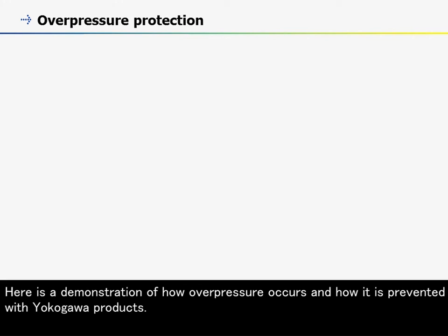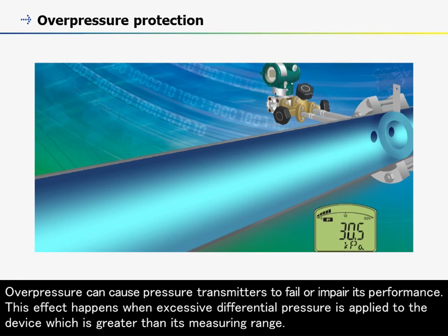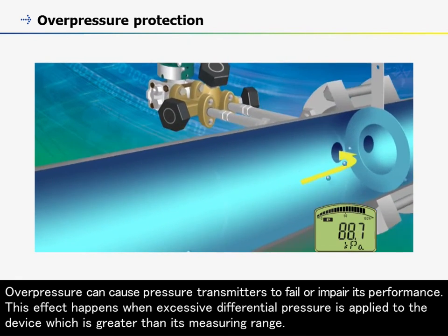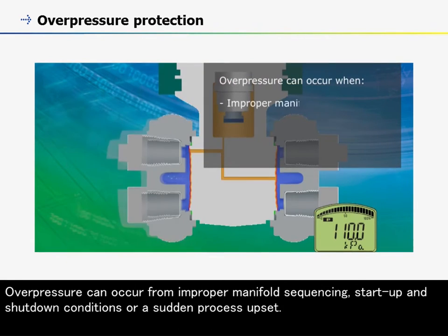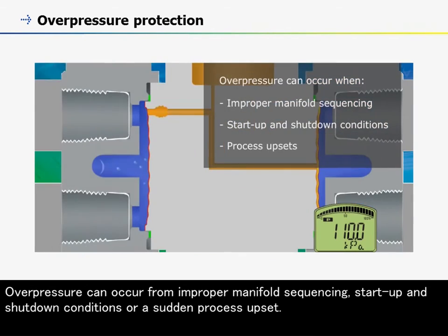Here is a demonstration of how overpressure occurs and how it is prevented with Yokogawa products. Overpressure can cause a pressure transmitter to fail or impair its performance. This effect happens when excessive differential pressure is applied to the device, which is greater than its measuring range. Overpressure can occur from improper manifold sequencing, start-up and shutdown conditions, or a sudden process upset.